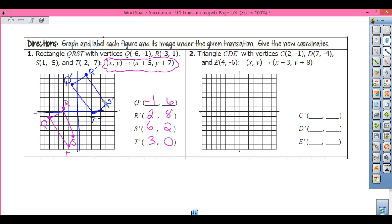So let's plot our C, our D, and our E. C is (2, -1). D is (7, -4). And E is (4, -4), and hopefully we have a triangle.